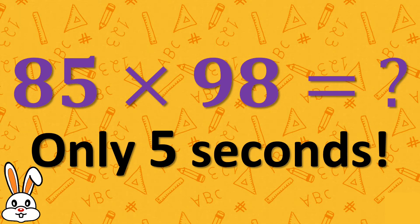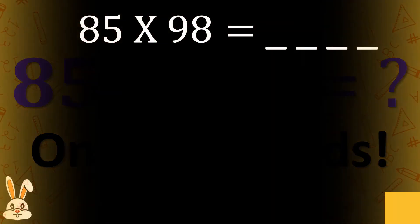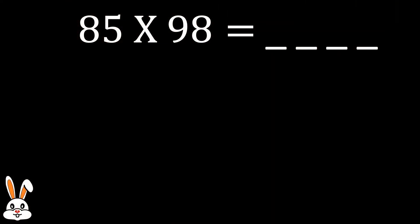Use this trick to multiply any two-digit numbers within 5 seconds. So let's take for example 85 multiplied by 98. How can we do this?